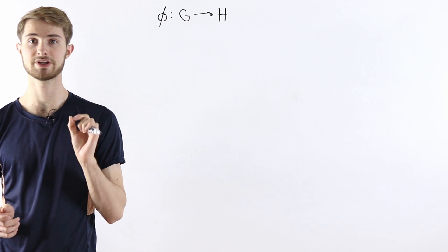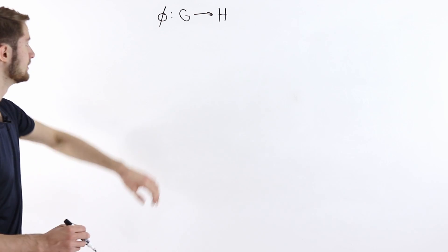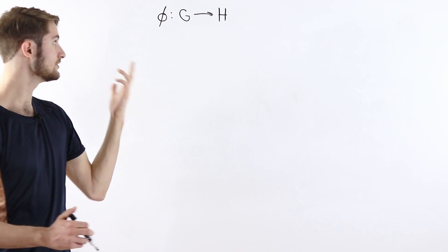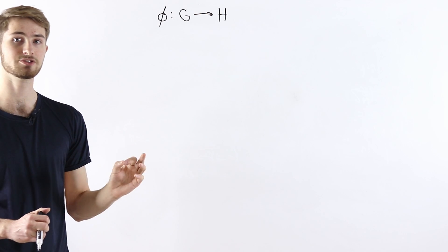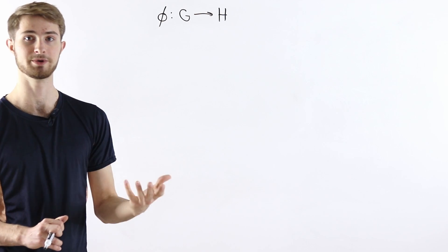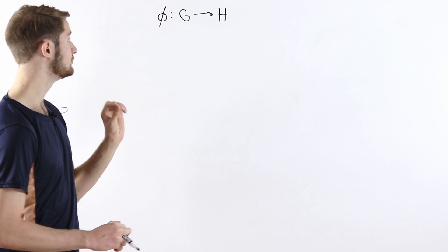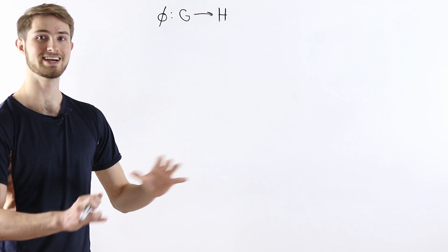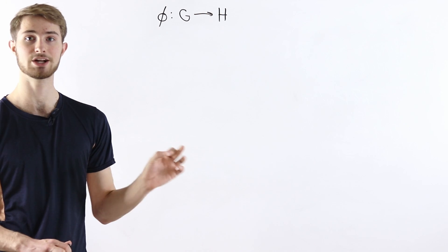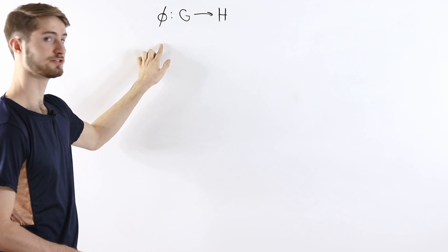We are going to talk about the first isomorphism theorem. Proofs of the first isomorphism theorem often start with some group homomorphism phi from G to H, and then use some tricks to turn this map into an isomorphism. It often feels like those changes are designed on purpose. My goal in this video is to show that the first isomorphism theorem is actually a natural consequence of just considering the pre-image map that we get from phi.